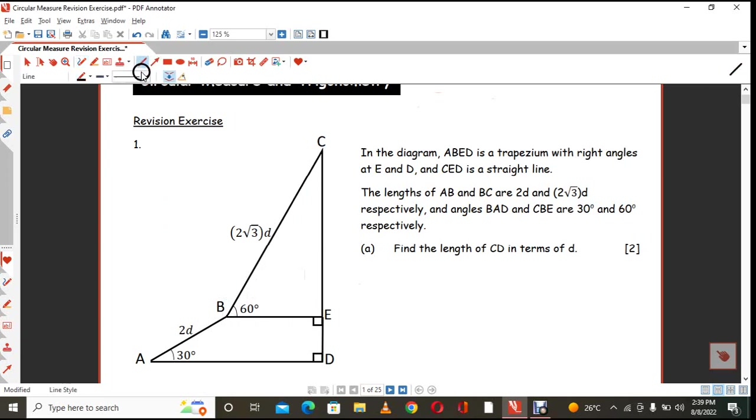So maybe you can go ahead and you can perhaps draw a dotted line like so. The reason why I'm drawing that dotted line there is because, and maybe I can indicate this to be point F, whatever that distance of BF is, the distance of BF is exactly equal to the distance of ED.